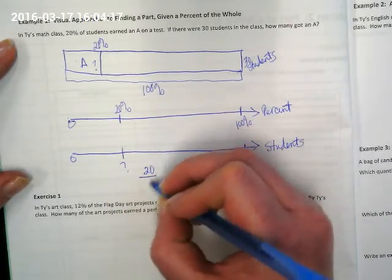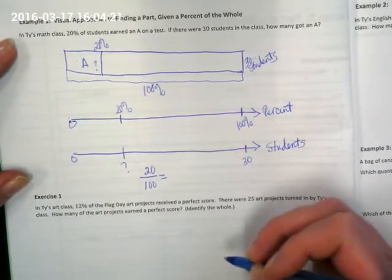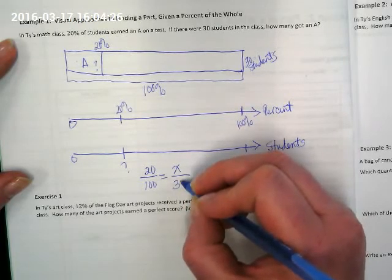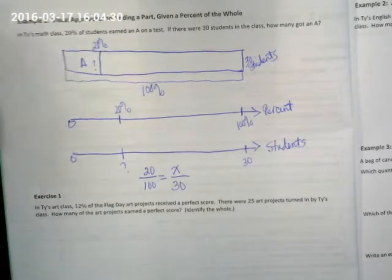And then we can go back and do what we know how to do well. We can make our percent ratio, and we can make our unknown and our whole ratio. And we can cross multiply and find out how many students that actually is.